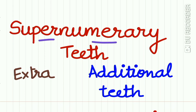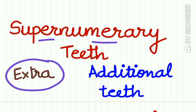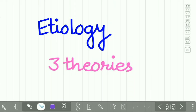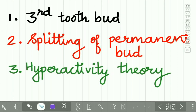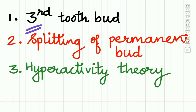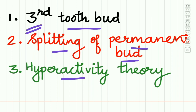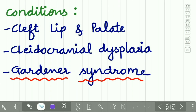The second condition we will study is supernumerary teeth — an extra or additional tooth present in the dentition. There are three theories explaining the cause: first, the presence of an extra tooth bud in the dental lamina; second, splitting of the permanent tooth bud resulting in a supernumerary tooth; and third, the hyperactivity theory, which states that supernumerary teeth form due to local independent conditioned hyperactivity of the dental lamina at focal areas.